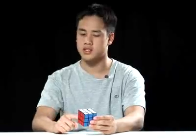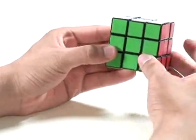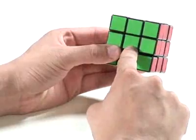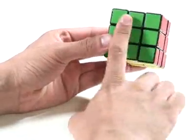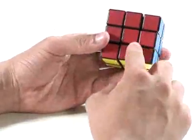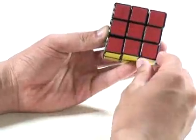The center pieces have one sticker, never move, and determine the face. This is a green center sticker, which means this face is green. This is a red center sticker, which means this face is red.